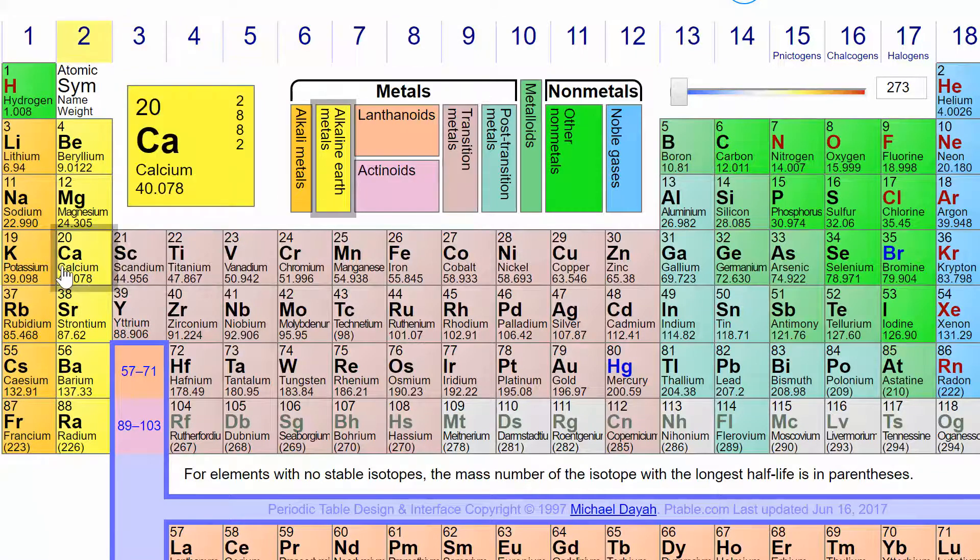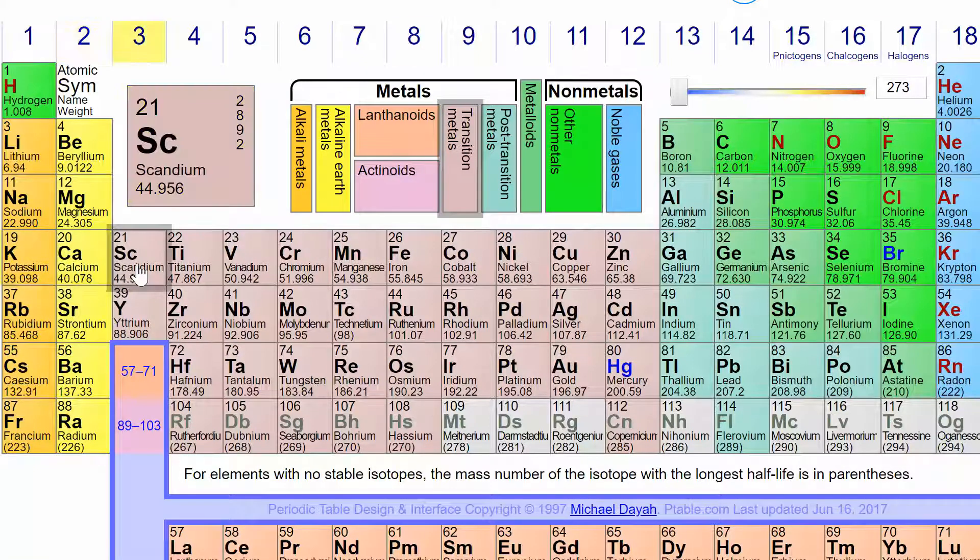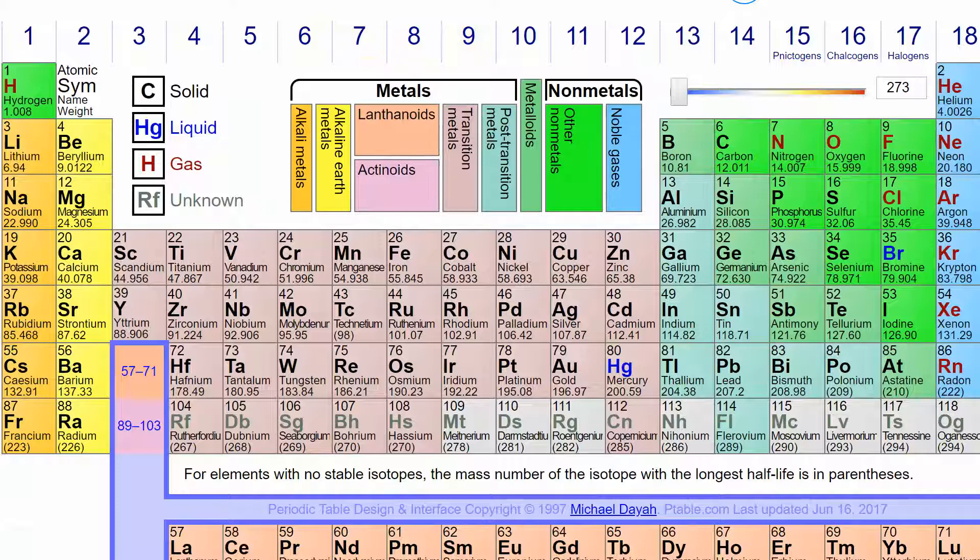Argon, and then 4s2, and now the D block starts at three, and we're going to go one, two, three, four, five, six, seven steps. So we have argon 4s2 3d7.